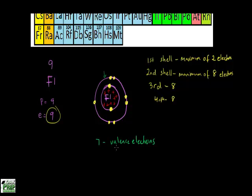Remember, every atom wants to have eight valence electrons on its outermost shell to be stable — they're all trying to be stable. Fluorine only has seven, so it needs one more to be stable. Eight valence electrons equals stable — this is what all atoms want.